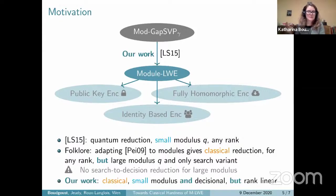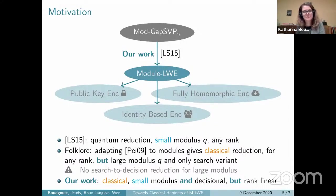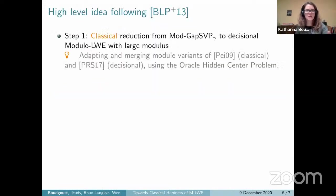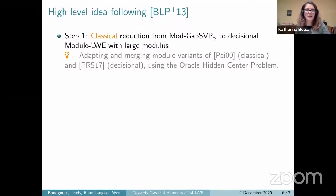Here is our contribution: we give a classical reduction, allow a small modulus, and go down to the decision variant — taking all the positive parts of prior work, at the expense of requiring linear rank. How do we achieve this? We follow the high-level idea of Prokhorsky, Lyubashevsky, Peikert, Regev, and Stille, in three steps. Step one is a classical reduction from the gap shortest vector problem over module lattices to the decision variant of module LWE, also using a more recent result from Peikert, Regev, and David-Dawitz.